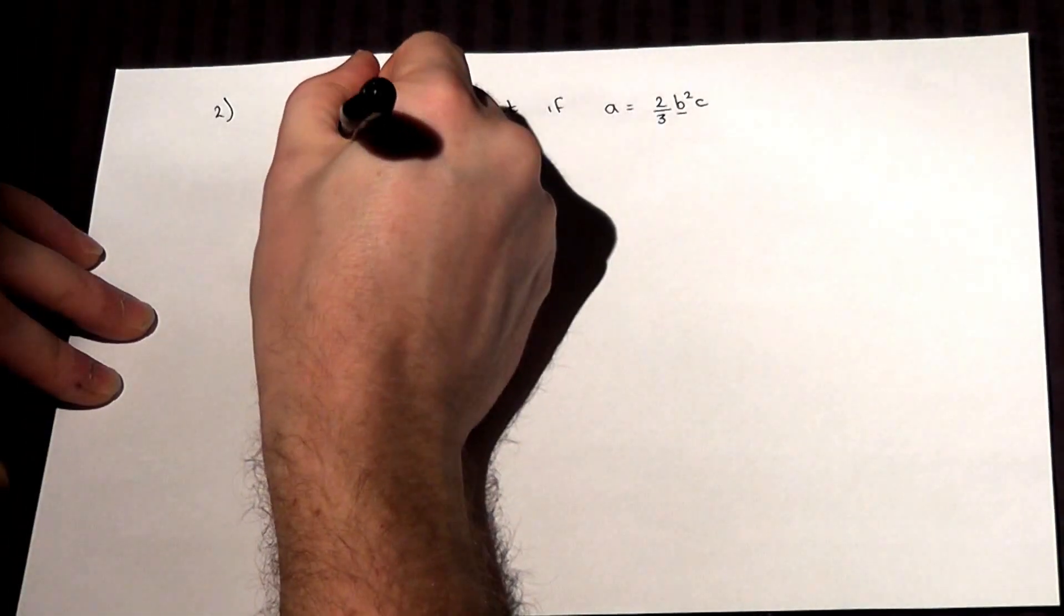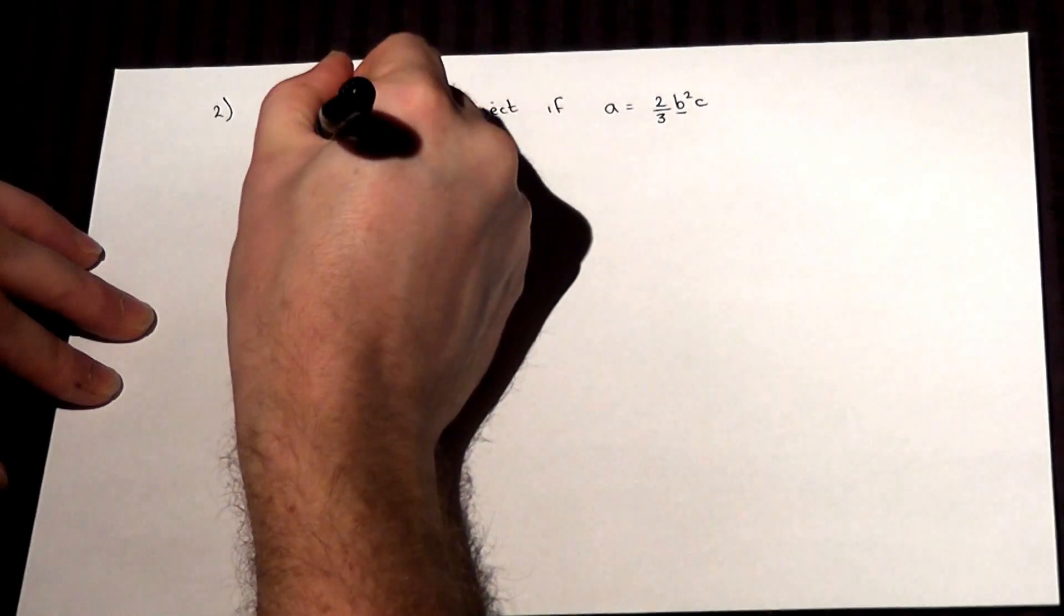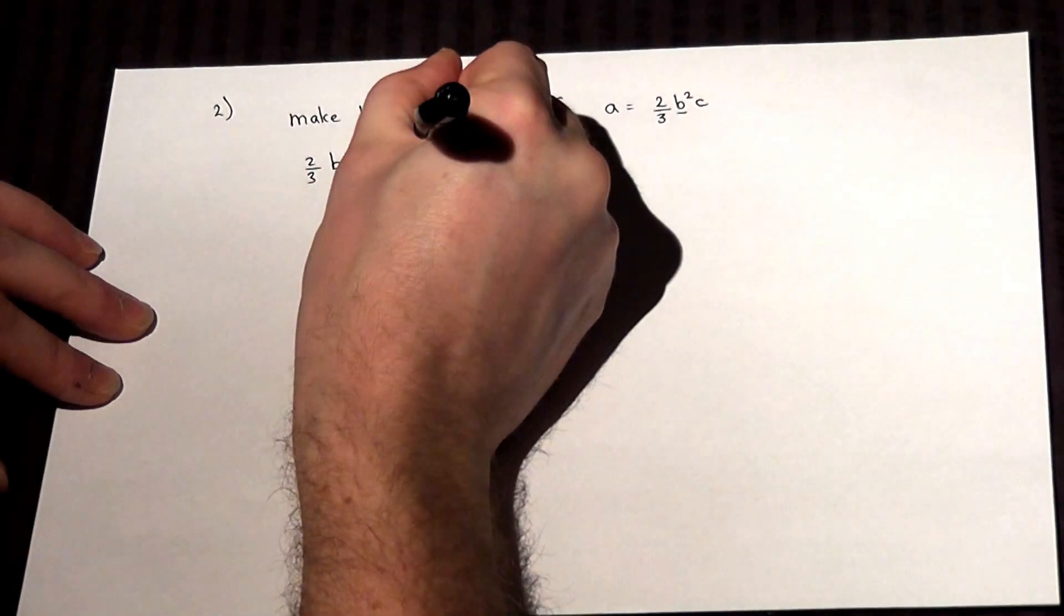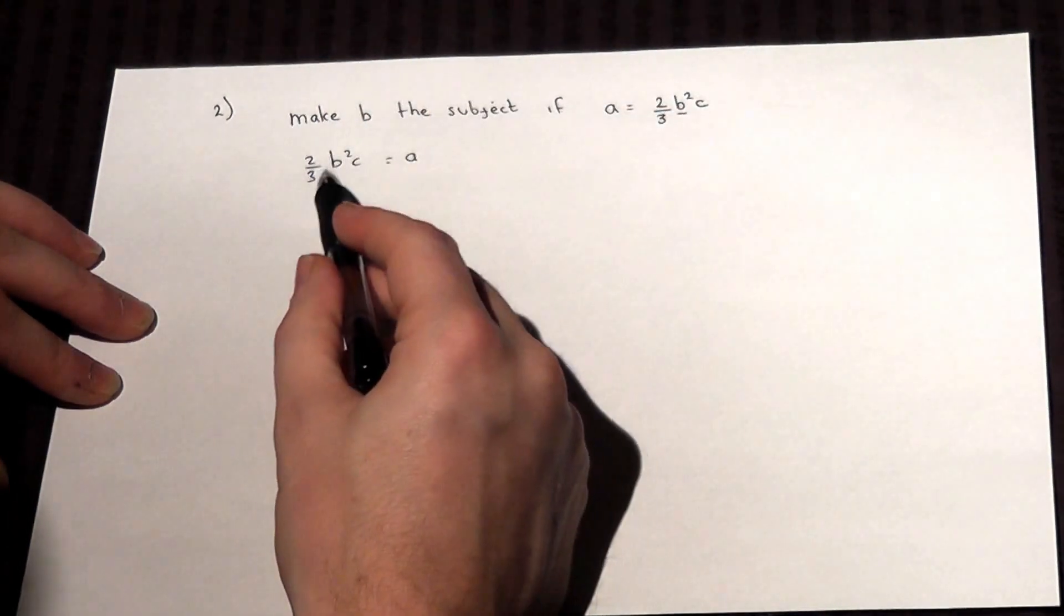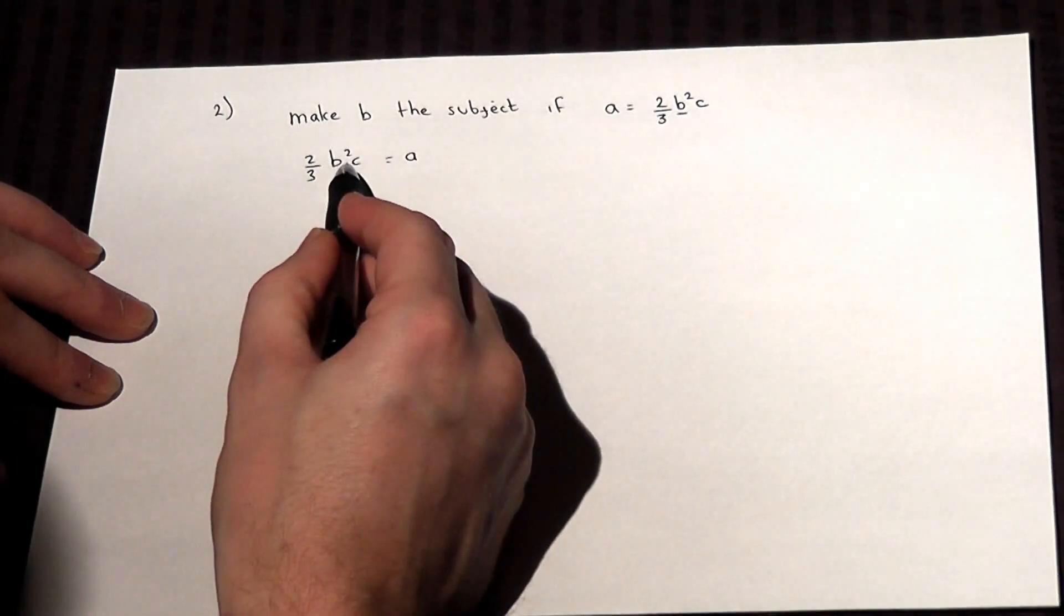I tend to rewrite this with the required letter on the left hand side. That's just my preference. And we want to gradually make the equation simpler to get down to B equals.